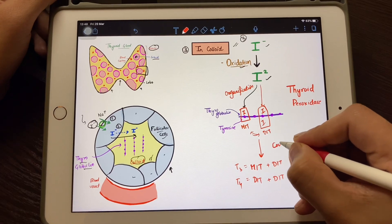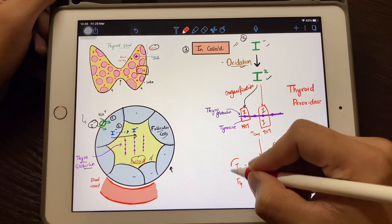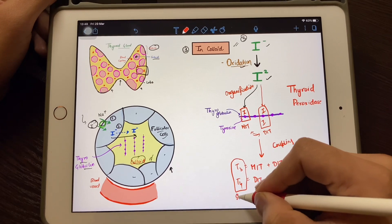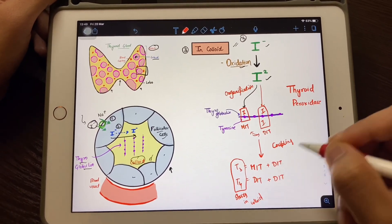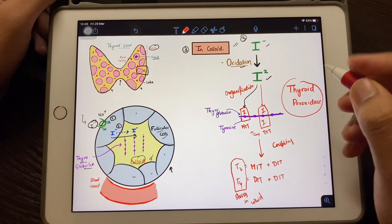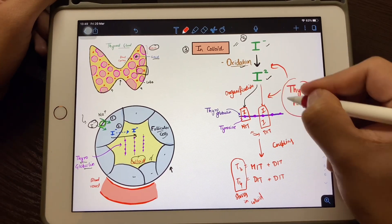Thyroid peroxidase regulates all three reactions—this is the enzyme that regulates all three reactions.